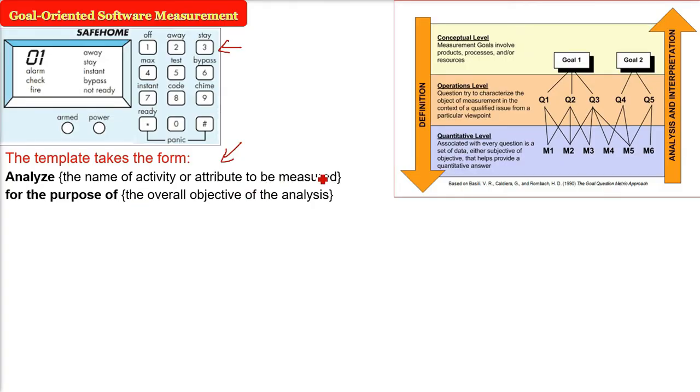For the purpose of, inside this what we will give: the overall objective of the analysis. Then we have with respect to. What we are going to write here: the aspect of the activity or attribute that is being considered.